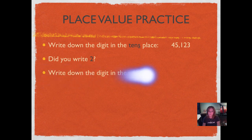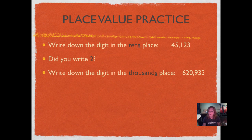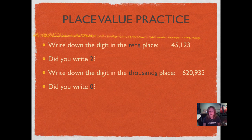Let's try another one. Write down the digit in the thousands place: 620,933. Remember to sing your place value song. Did you write zero? Let's sing our song starting with the three on the right: ones, tens, hundreds, thousands, ten thousands, hundred thousands. So the zero is in the thousands place.